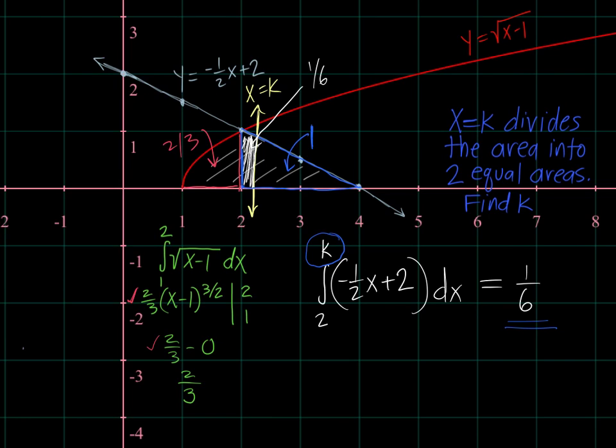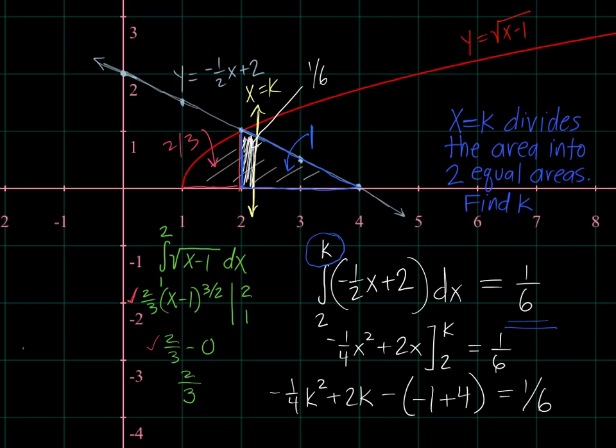So let's integrate. Negative one-half becomes negative one-half x squared over two or negative one-fourth x squared. Two becomes 2x. Limits of integration are k and 2. And the answer needs to be one-sixth. So sub in k, what do you get? You get negative one-fourth k squared plus 2k. And when I sub in 2, I get, let's see, negative one-fourth times 2 squared. That's negative 1 plus 4 equals one-sixth. So I have an equation that I would need to solve.